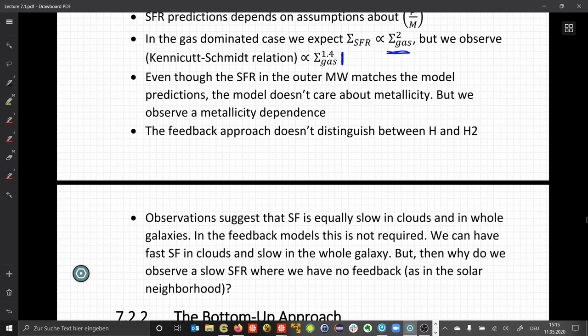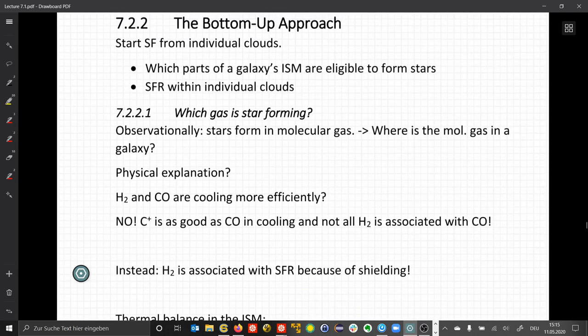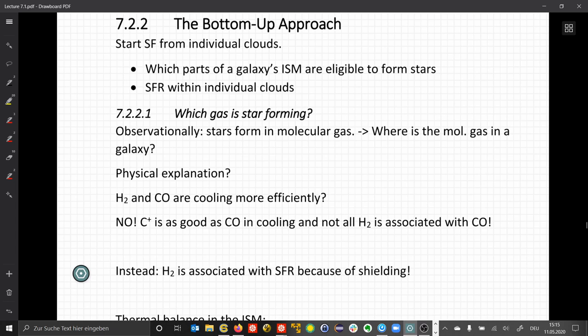Another theoretical approach is the bottom-up approach, where we look at individual clouds and take the microphysics more into focus, then try to conclude on the global properties. Let's look at which parts of a galaxy's interstellar medium are eligible to form stars and what star formation rate for individual clouds result.